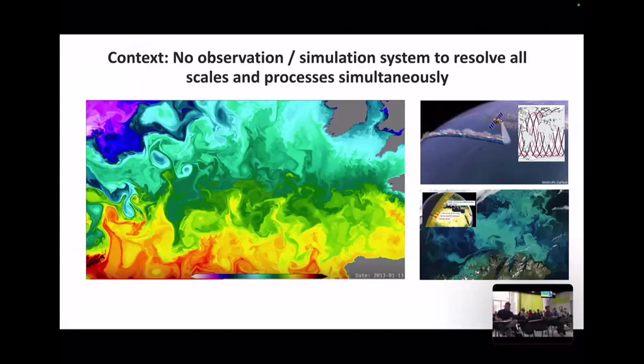The key point regarding ocean science is that there is no observation or simulation system that can provide all scales and processes at any point in time and space. Here is an output of a numerical simulation of sea surface temperature — you can see many different structures at many different scales. We have very good models, but models cannot reproduce all the patterns you can see in observations.